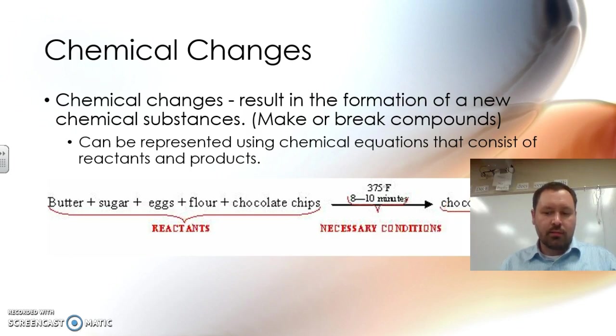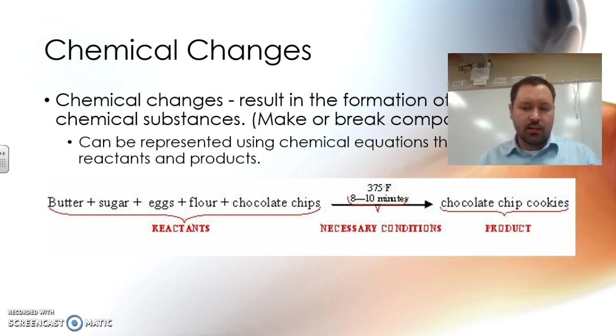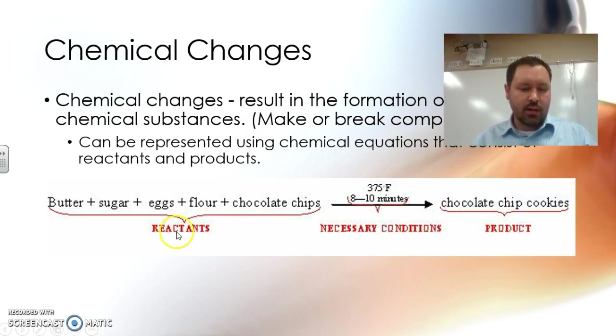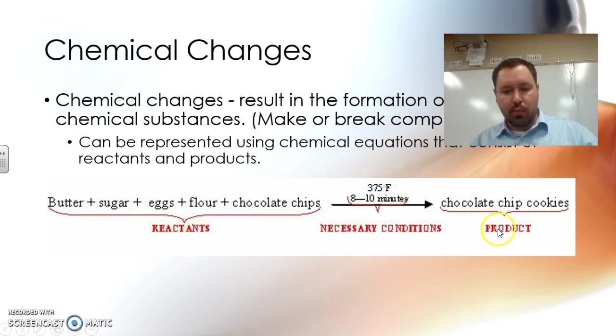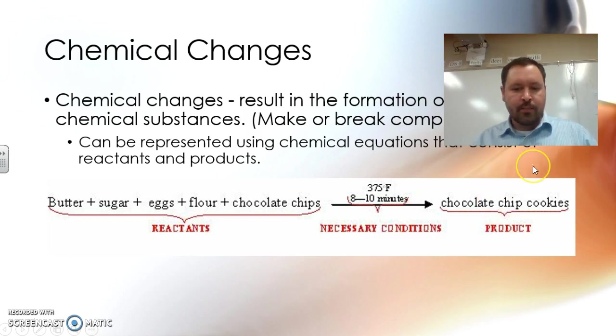A good way to remember this: the reactants are like the ingredients you use to make cookies — the butter, the sugar, the eggs, the chocolate chips. Those are the reactants. What's the product? The cookie. The product is the thing you make; reactants are what you put in, and the product is what you get out. That's even the example shown here: butter, sugar, eggs, flour, chocolate chips are the reactants, and the cookies are the product.